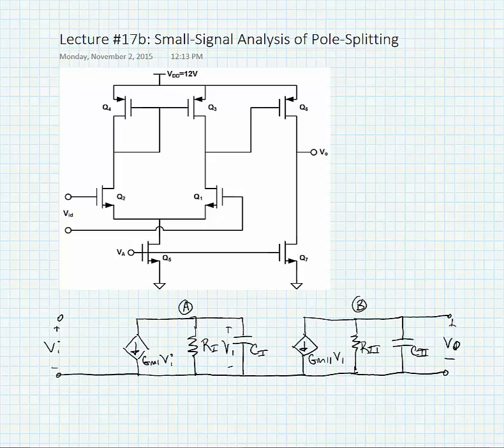Okay, we're going to look at the small signal analysis for pole splitting. What we are going to do for pole splitting here is we're putting a large capacitor around the second inverting gain stage of a two-stage op-amp. In other words, we'd be placing our compensation capacitor around Q6 in the two-stage op-amp drawn here.